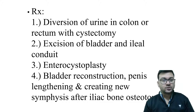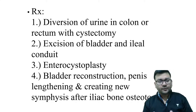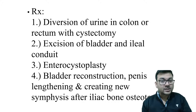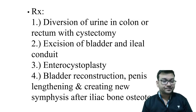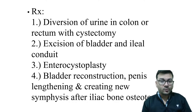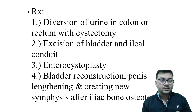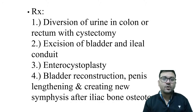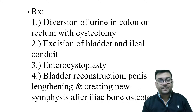The first surgical option is cystectomy — removing the bladder — because the bladder cannot be repaired, and if left, there are chances of adenocarcinoma. After cystectomy, both ureters must be drained, so we anastomose the lower end of the ureter to the colon or rectum. This diversion of urine into the colon or rectum is done alongside cystectomy.